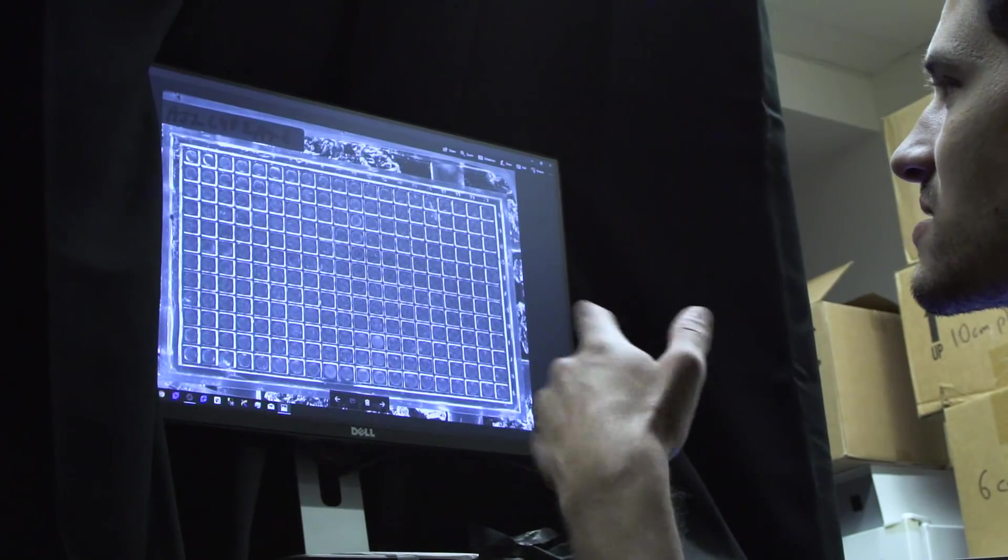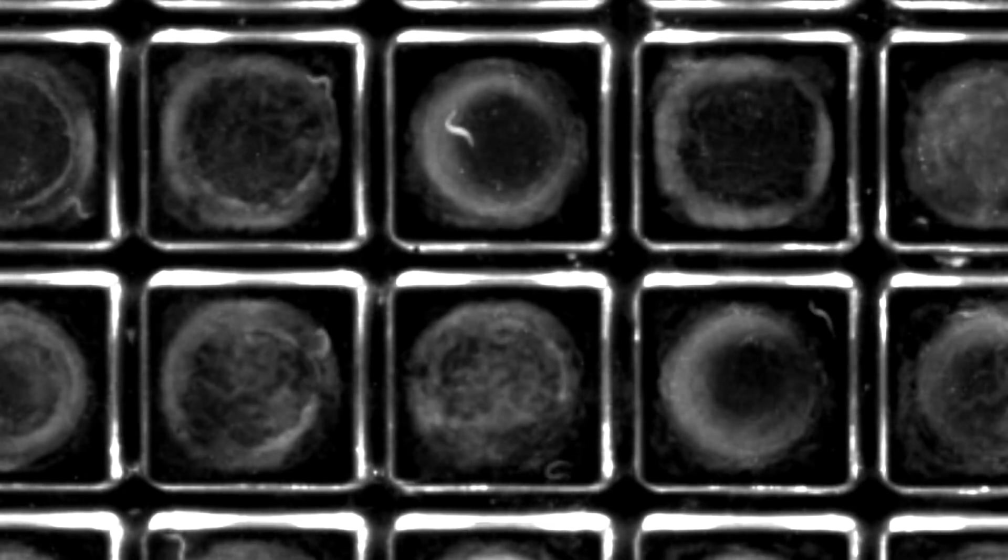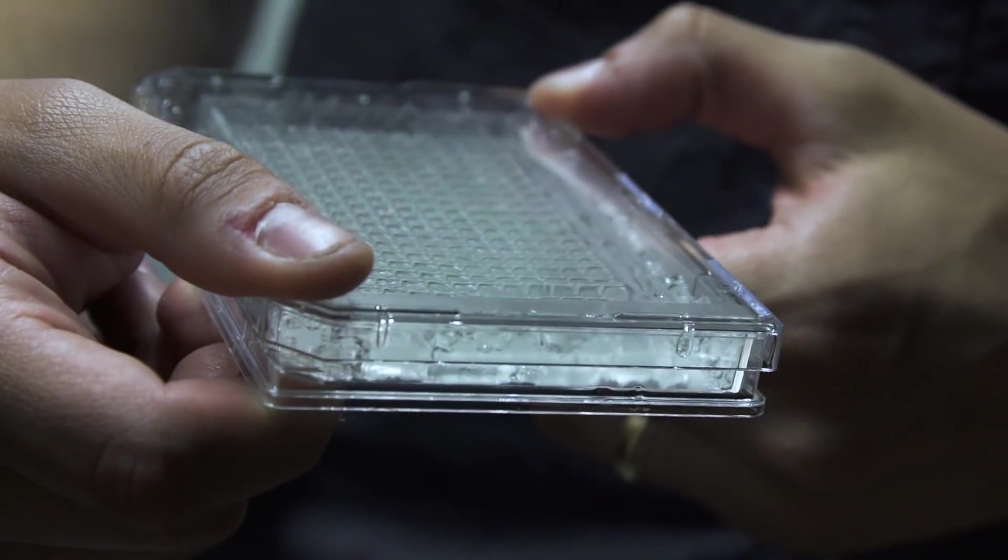The more a worm moves, the more pixels will have changed, and we use the amount of movement as a proxy for how healthy each worm is. It's certainly the most simple measurement of health because we don't have to do any more complicated invasive sort of procedures.